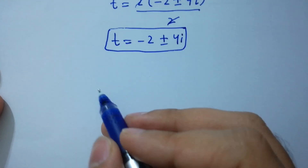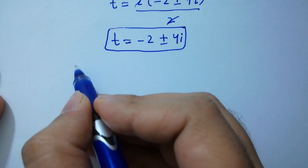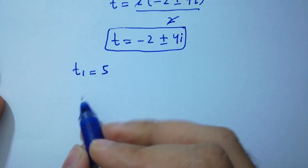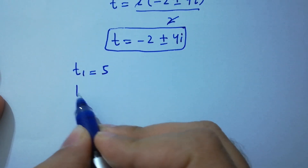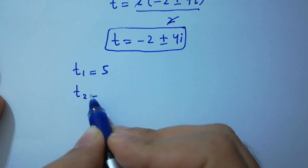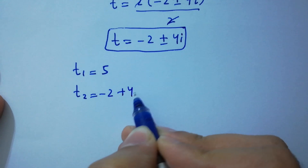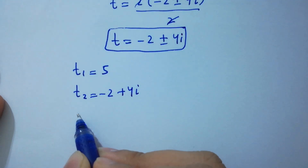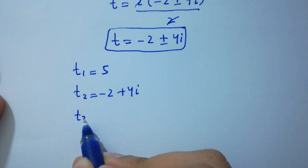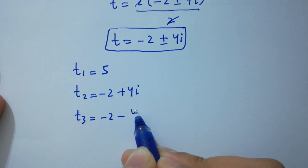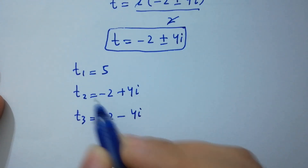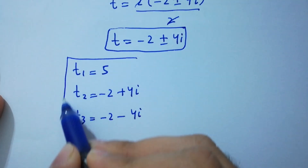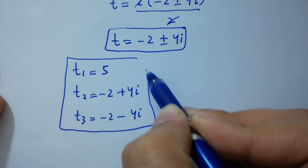So here we have three solutions: t₁ equals 5, t₂ equals minus 2 plus 4i, and t₃ equals minus 2 minus 4i.